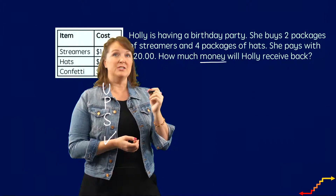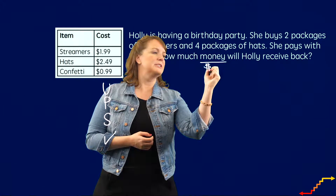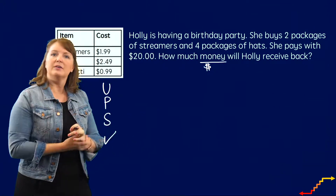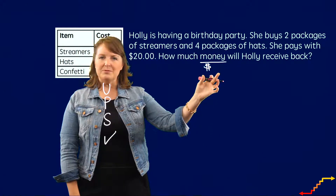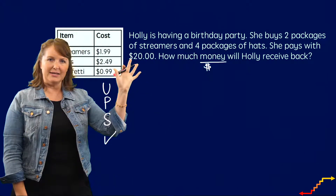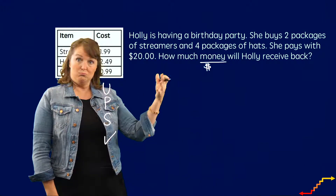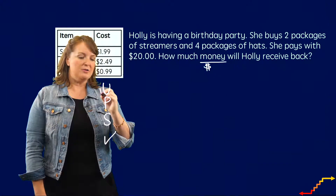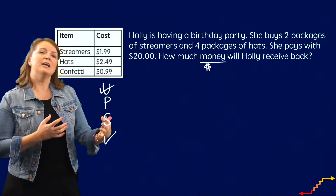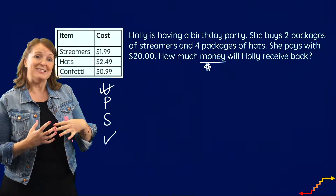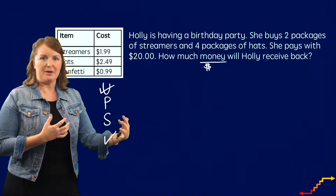Sometimes teachers like to write a little label — remember, we're talking about dollars here, not cents. So we're going to have to figure out how much money Holly spent on things, and then we're going to have to figure out how much Holly received back. I first realized I have to figure out how much she spent, and then we have to figure out how much she got back. So I see that this is a multi-step problem.